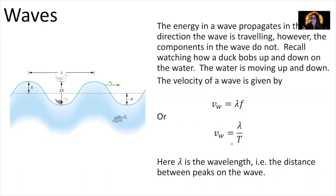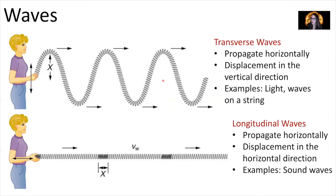Next semester we'll talk about light, where the velocity of the wave is the speed of light — 3×10⁸ meters per second. Here we're talking about waves through materials. The water surface wave and light waves are transverse waves. Transverse waves propagate horizontally but the displacement of the wave is in the vertical direction. With a slinky oscillated up and down, we get a wave pattern that has a forward speed — this is a transverse wave. Waves on a string behave the same way.